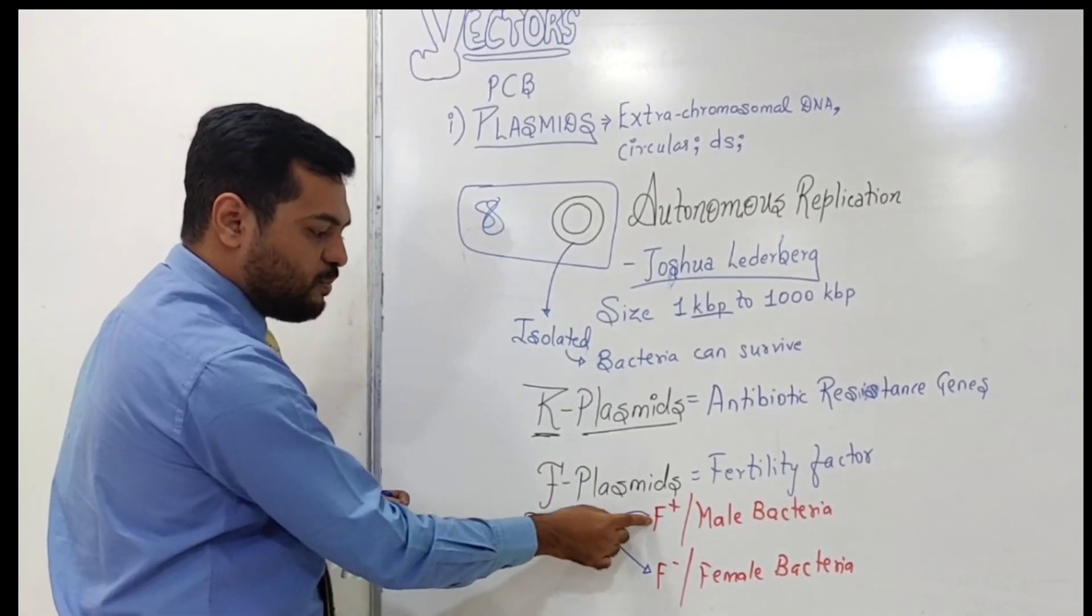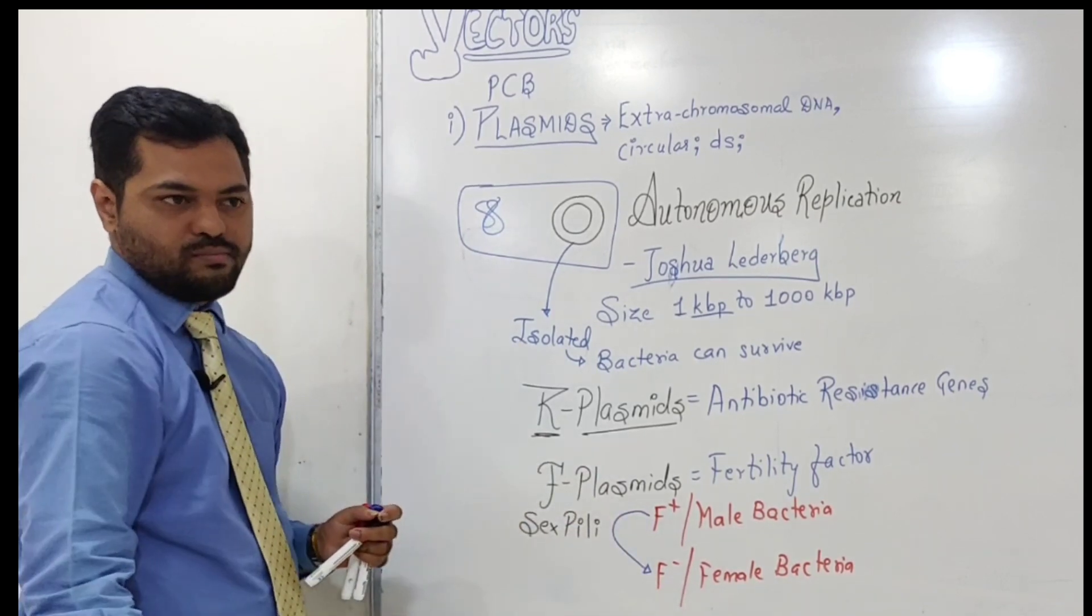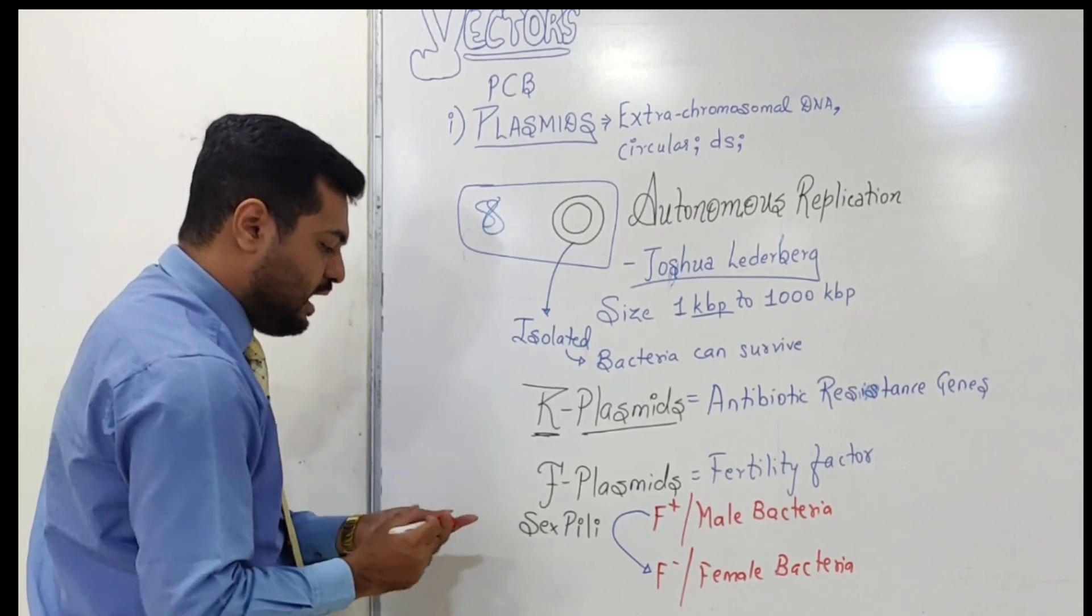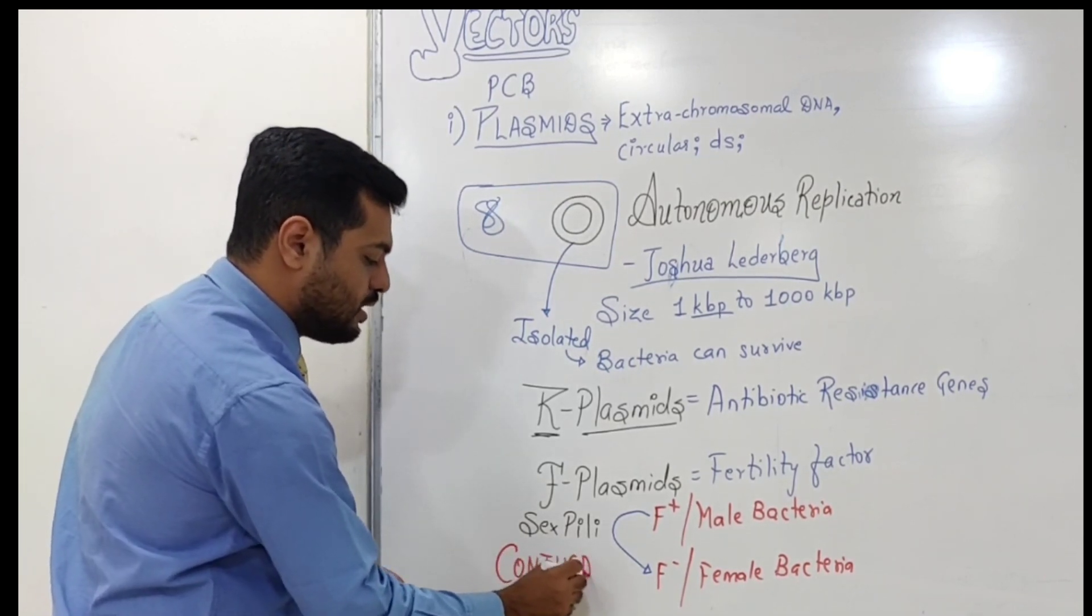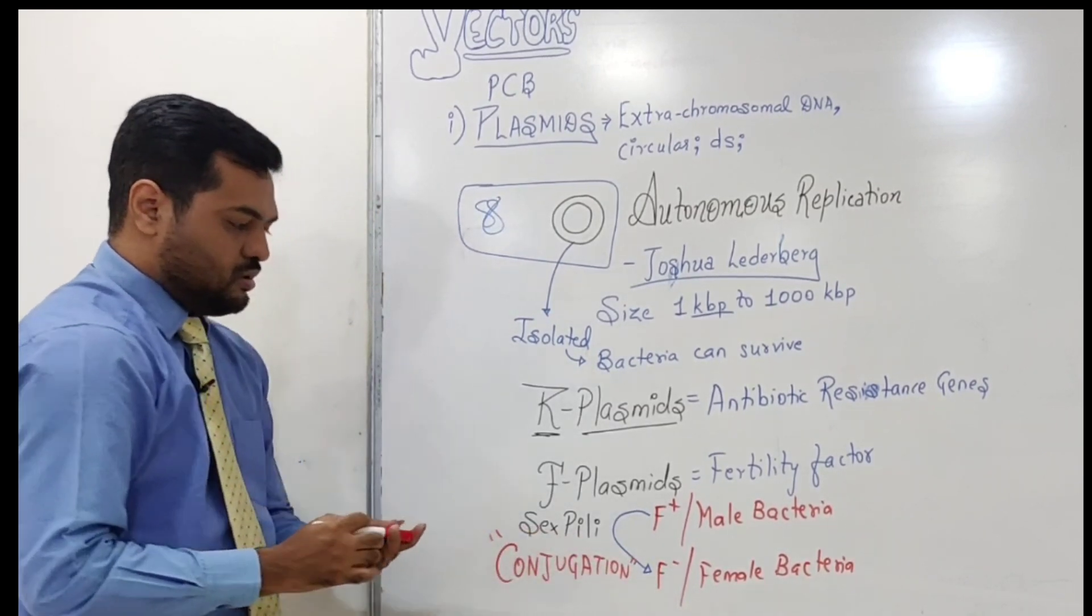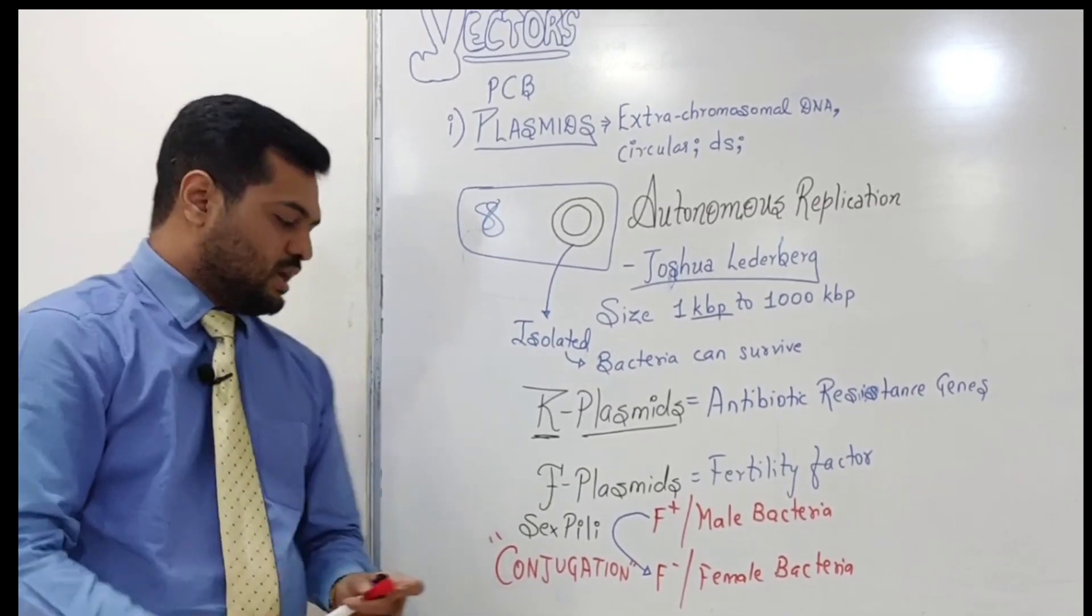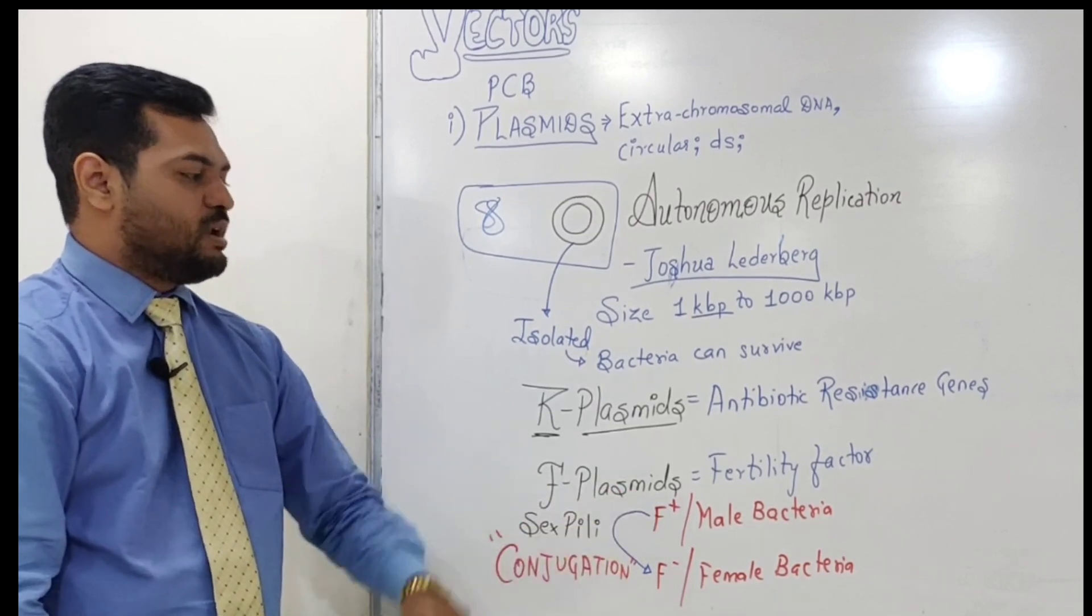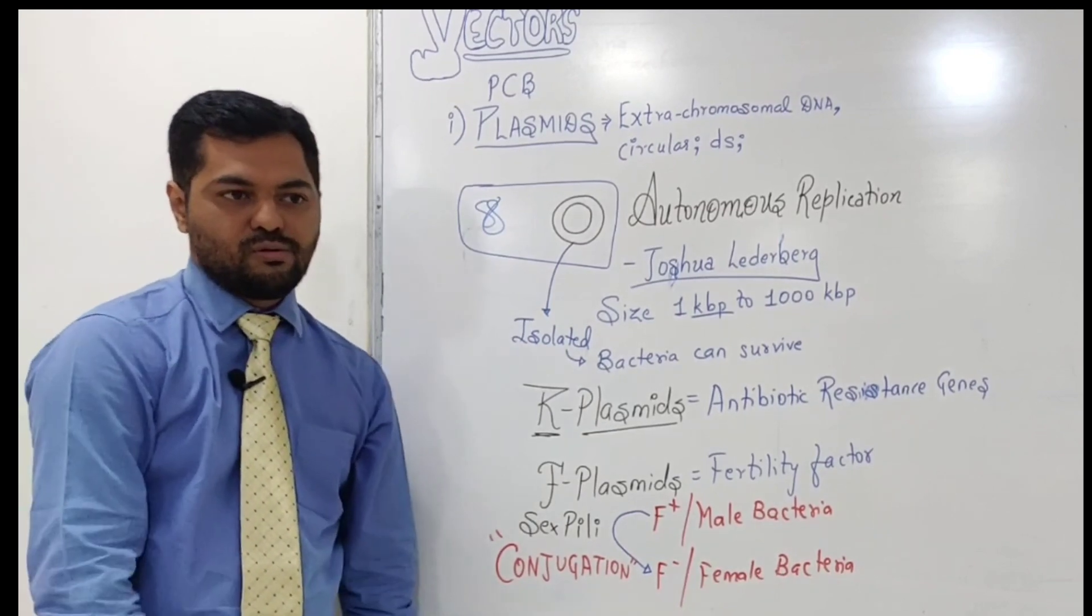Through sex pili, F plus bacteria can transfer a copy of the plasmid to F minus bacteria. This process is known as conjugation. So we have covered transformation from Griffith's experiment, and now conjugation, where sex pili form a conjugation tube for F plasmid transfer. This is the introduction about plasmids.